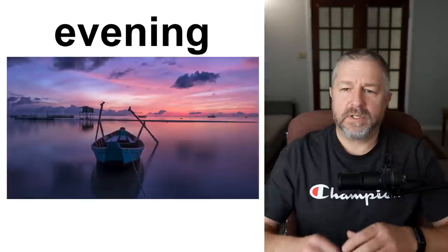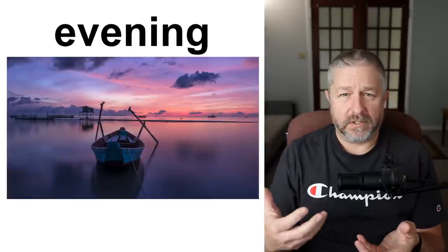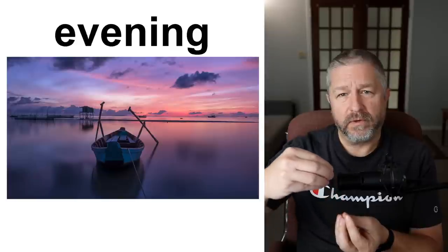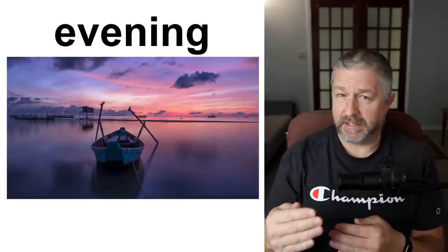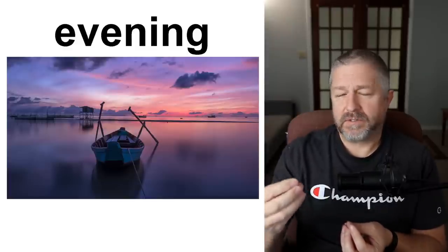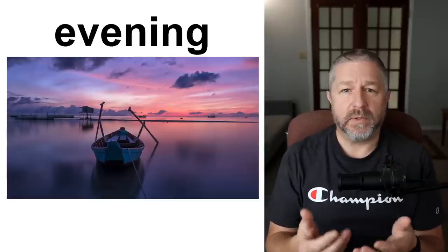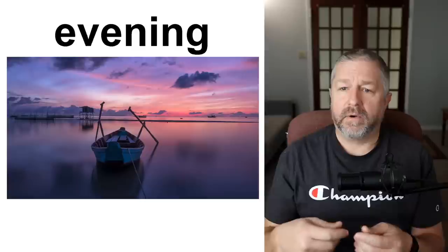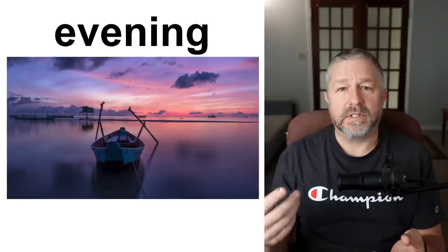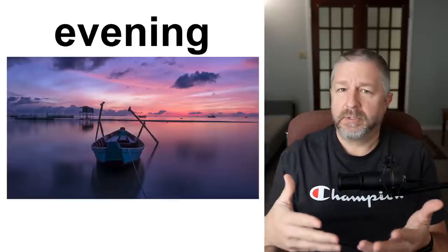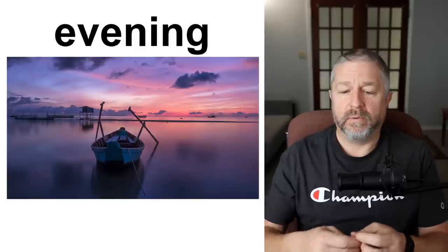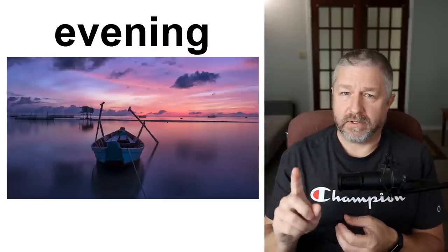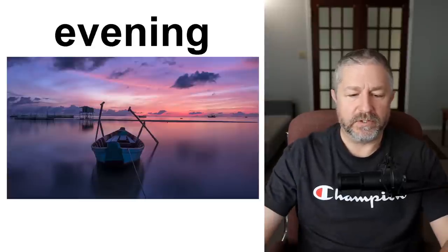Evening — to me, evening starts after the sun goes down. Dusk and evening can be happening at the same time, but evening goes further into the beginning of the night. Dusk ends when it's dark. Evening ends when you go to bed, because we use evening to talk about doing things after the sun goes down until we go to bed. For example: 'What are you doing tomorrow evening?' All events between about 5 or 6 o'clock and midnight would be referred to as the evening.